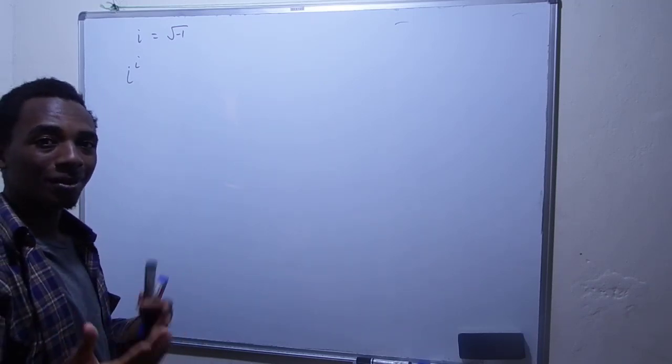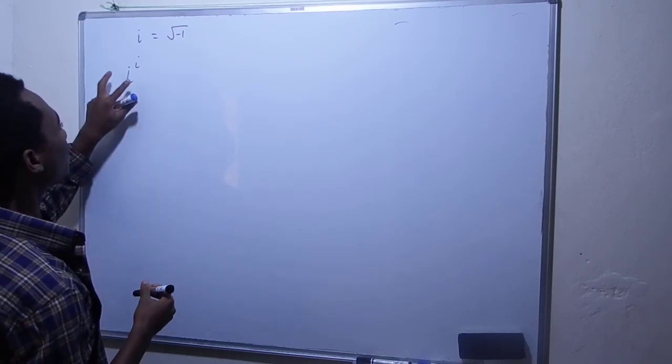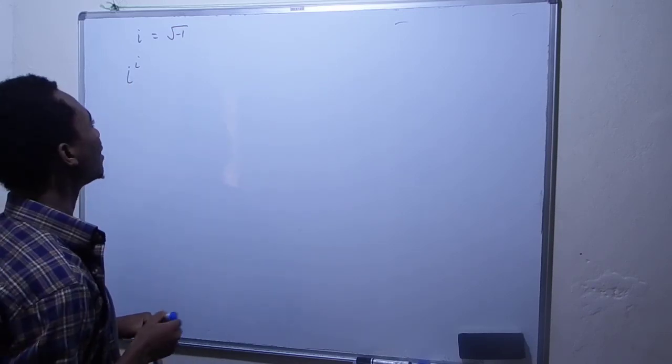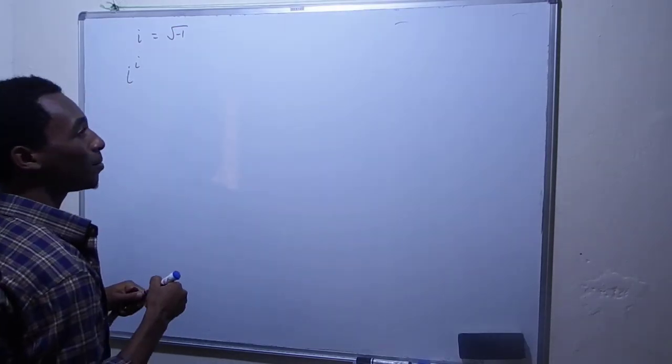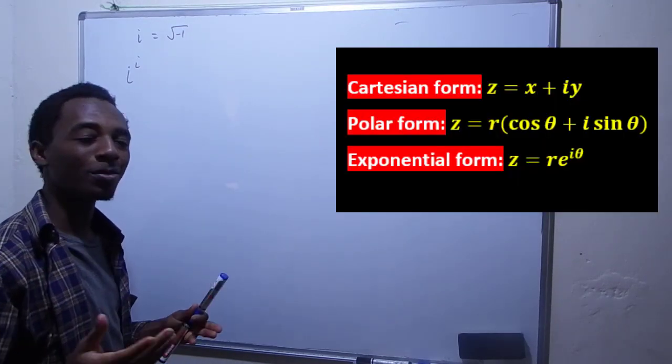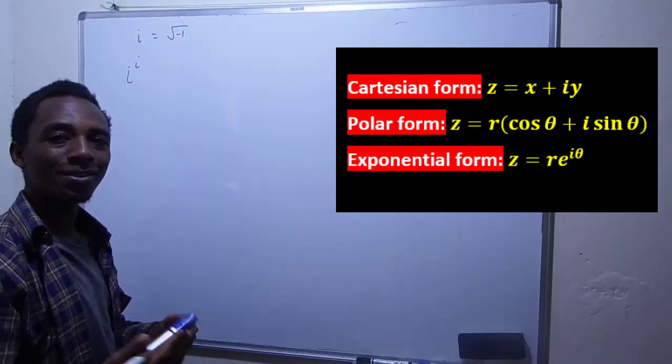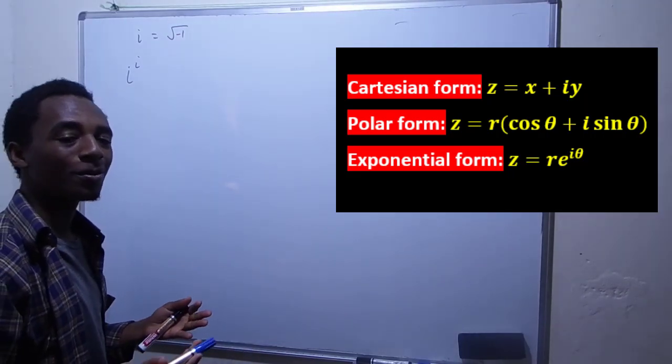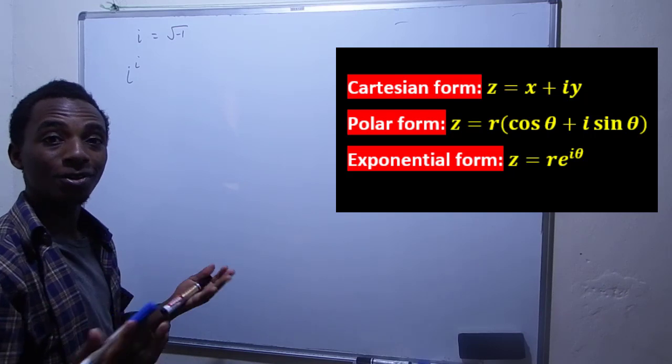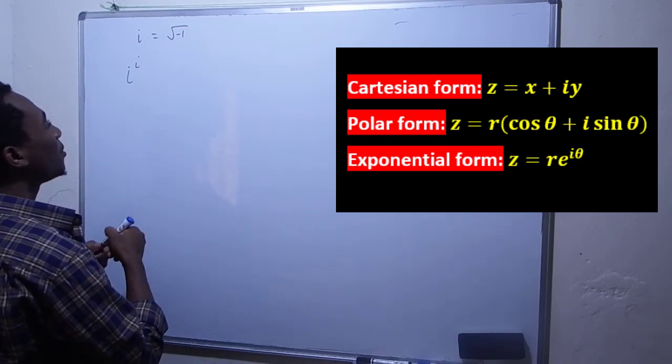The first and probably simplest method is to write the bottom i in exponential form. We have three ways of writing complex numbers: Cartesian form using x and y, polar form using the modulus and argument, and exponential form.